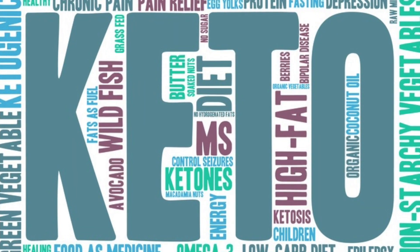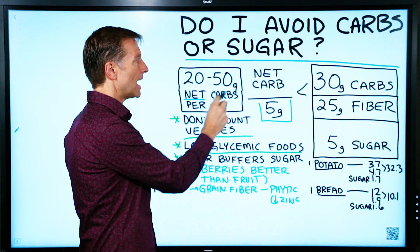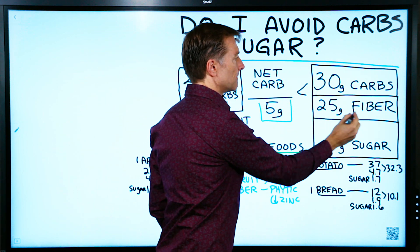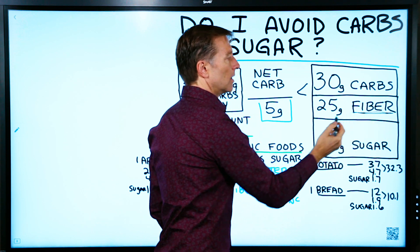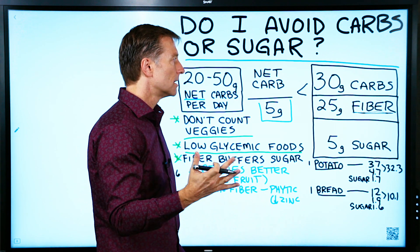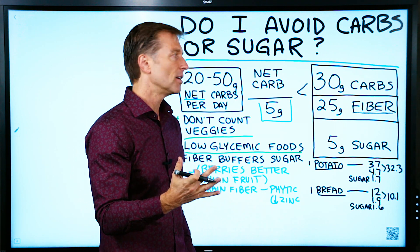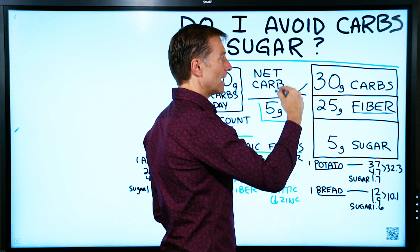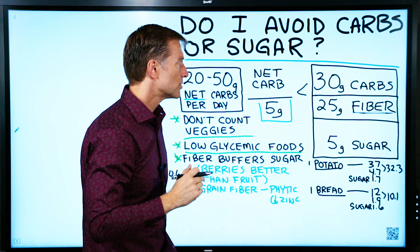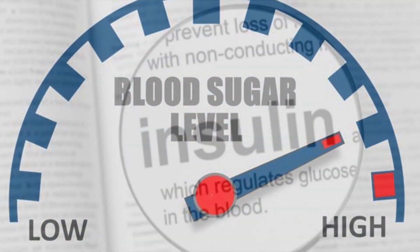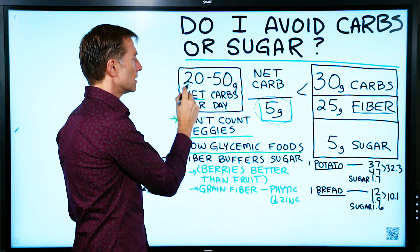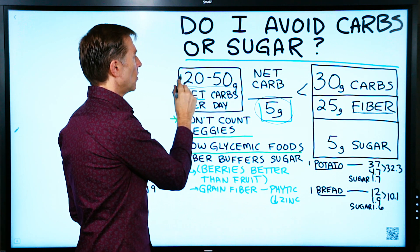When we do keto, we're talking about net carbs, not total carbs. What are net carbs? Basically take the total and minus the fiber. Fiber is a carbohydrate, but it doesn't have any response on insulin. This is why we deduct the fiber — because it's not going to raise insulin. The less fiber we have, the more that carbohydrate is going to spike blood sugars and raise insulin.